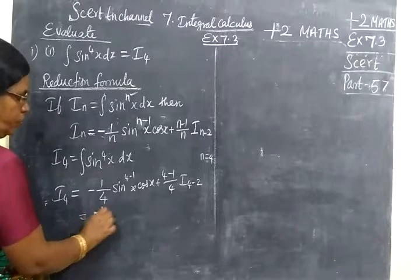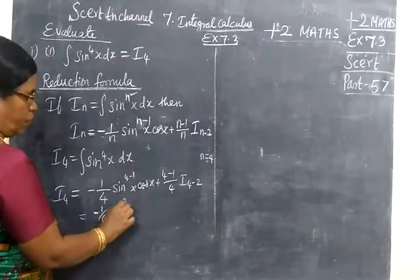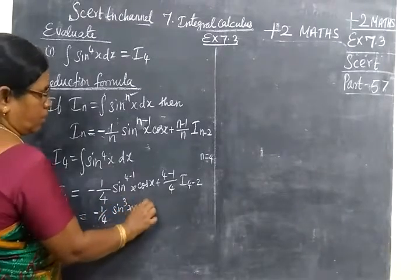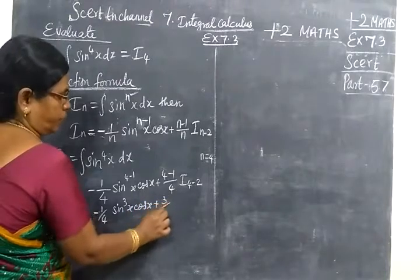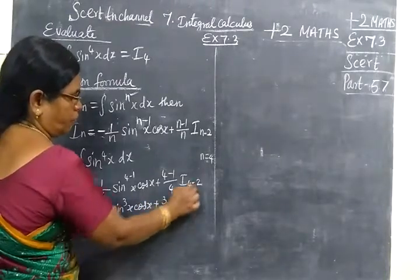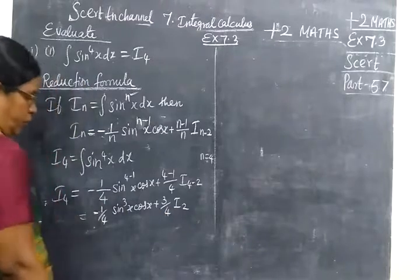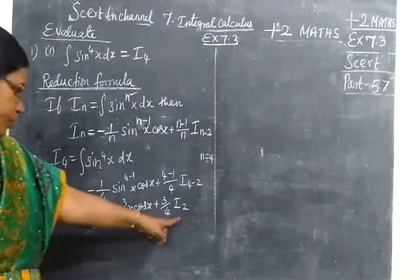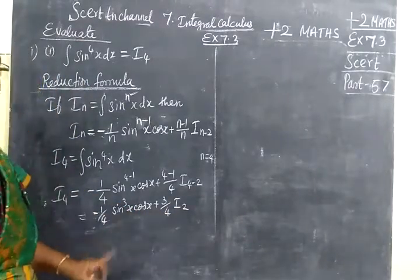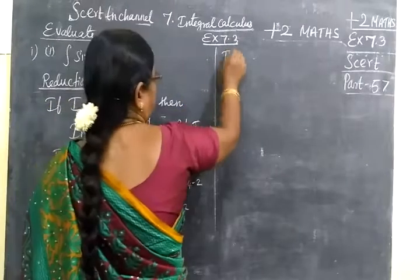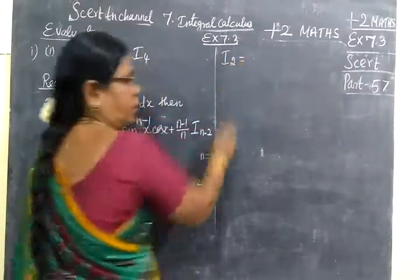So equal to minus 1 by 4 sin³x cos x plus 3 by 4 I₂. Now we want to find I₂. I₂ contributes to the sum. Now write I₂. Again use the reduction formula.